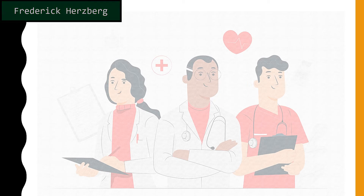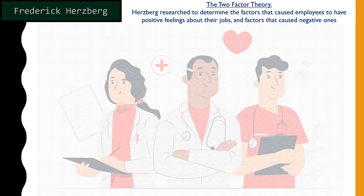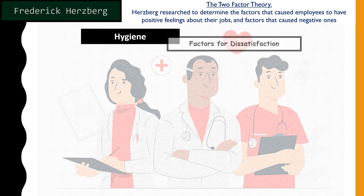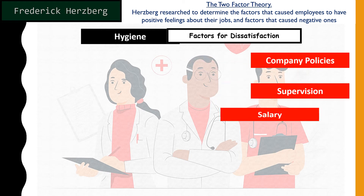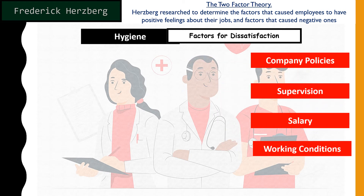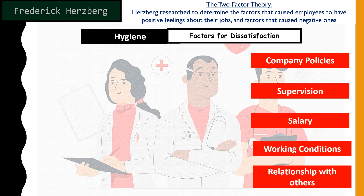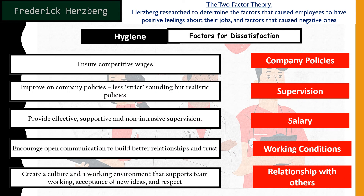Now let's do an exercise. On the screen you will see the hygiene factors — factors of dissatisfaction: company policies, supervision, salary, working conditions, and relationship with others. On the right-hand side are the descriptions for all those factors of dissatisfaction in a jumbled-up manner. Your task is to match the correct description to the correct factor. Take a moment to do the matching before we move on.